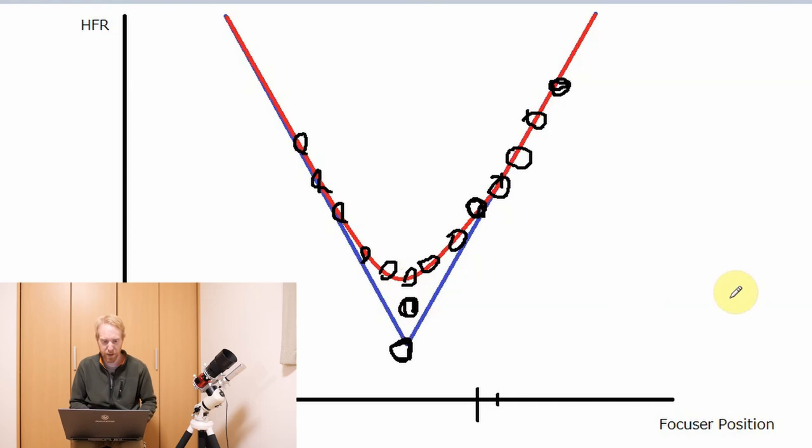There's another thing that happens in Nina as well: at the end when it has found the best point of focus, it will of course move the focuser there. It will take another exposure, compute the HFR, and compare to the HFR that it took at the initial point. If it finds that the HFR at the initial point is at least 15% better than the HFR at the end of the focusing routine, it will determine that it has failed to focus properly, which can absolutely happen. The main reason why this would happen is because of focuser backlash.